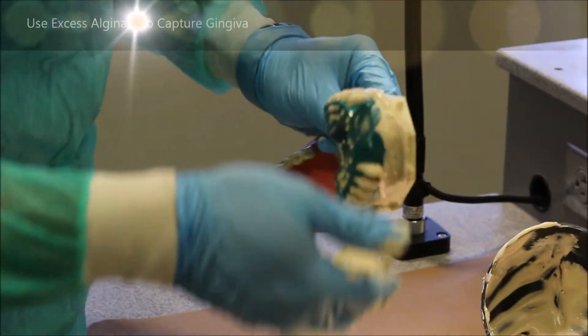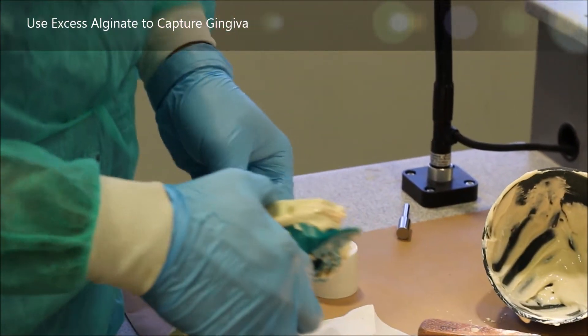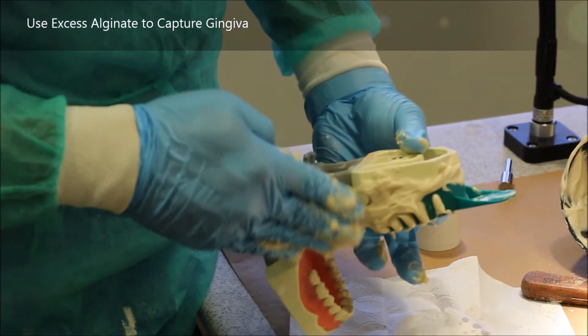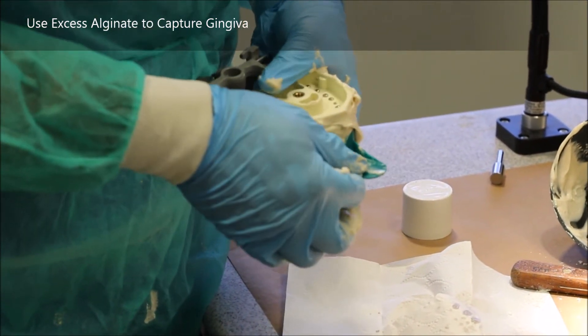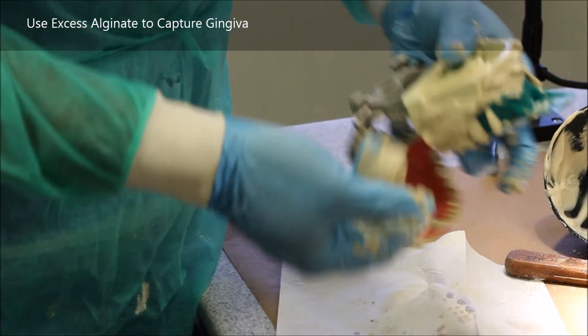Since this is a typodont that I'm trying to take the impression of and I don't have a lip that I could press down to roll, I'm simply going to take the excess alginate that I mixed and use it to ensure that I coat all the pink gingiva of the typodont.